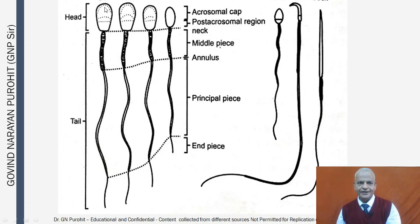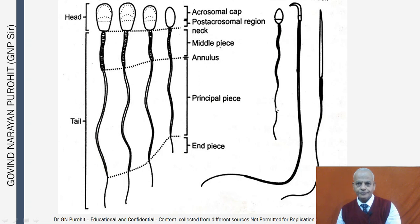You can see here the head, tail, neck, midpiece, principal piece, and end piece. These are the dimensions of spermatozoa in different species.